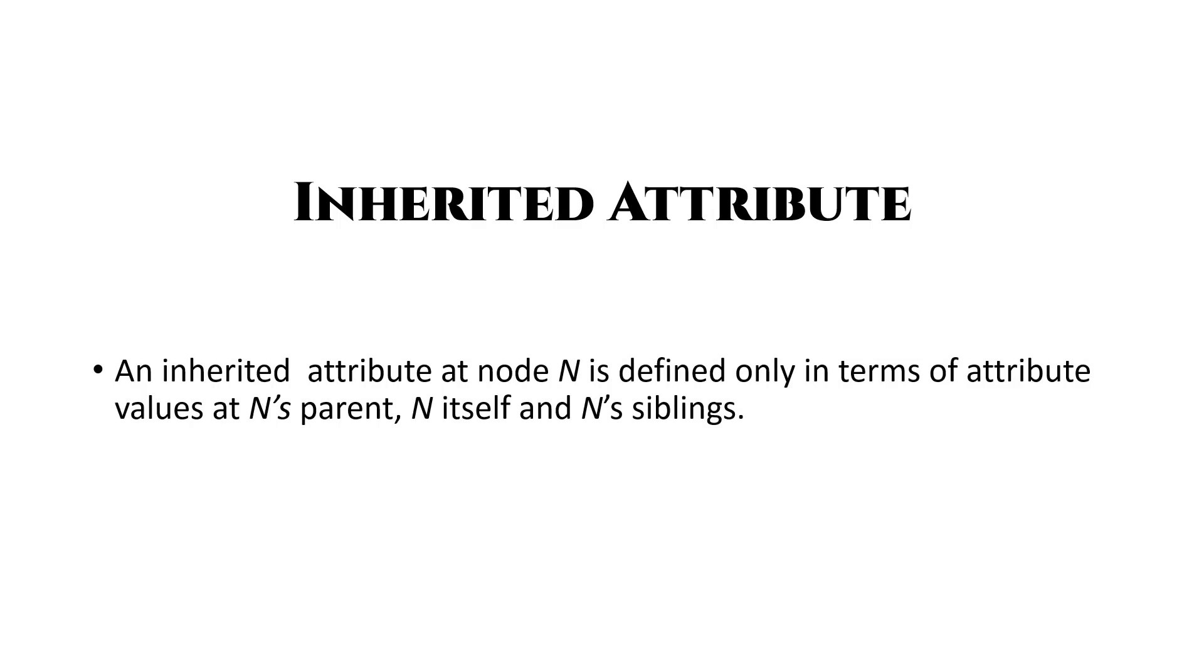Second, we have inherited attribute. An inherited attribute for a non-terminal b at a parse-tree node n is defined as a semantic rule associated with the production at the parent of n. Note that the production must have b as a symbol in its body. An inherited attribute at node n is defined only in terms of attribute values at n's parent and itself and n's siblings.